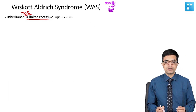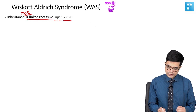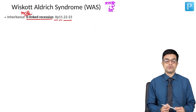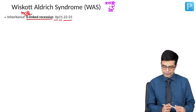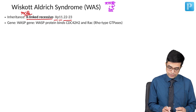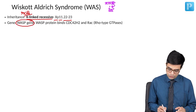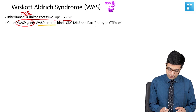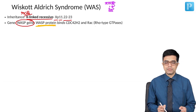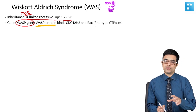The gene is present on the short arm of chromosome Xp11, with the gene locus at 11.22 and 11.23. The gene is called the WASP gene, which codes for a protein known as WASP protein — WASP stands for Wiscott-Aldrich Syndrome Protein.